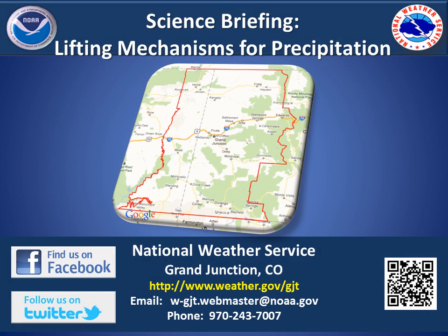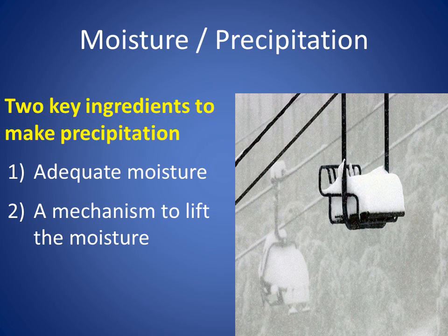Here is the Grand Junction Science Briefing: Lifting Mechanisms for Precipitation. There are two main ingredients to make precipitation. The first is adequate moisture. The second is a mechanism — an ability or way to lift the moisture. We will discuss five mechanisms for lift which are needed to generate precipitation in this presentation.